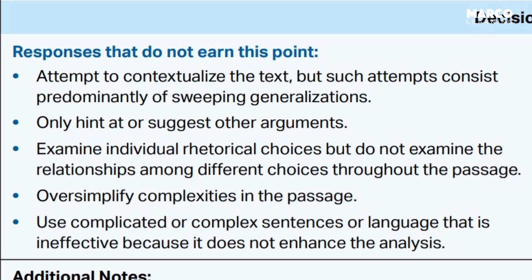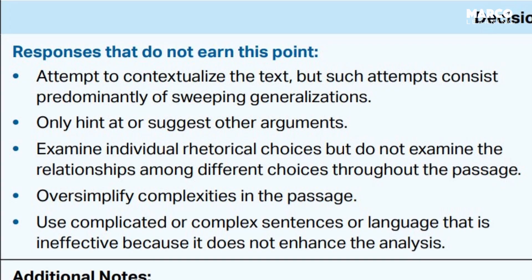The second bullet point says you only hint at or suggest other arguments. So if you, in your conclusion, drift toward a complex idea but don't really develop it in any substantive way, it's not enough to earn the sophistication point. The third one says that you have examined individual rhetorical choices — throughout the passage the author uses diction, syntax, and pathos to achieve his purpose — but do not examine the relationships among different choices. What does the tone shift between paragraphs five and six do to help the author reach her audience? Rhetorical devices aren't just strategies and tricks; they're something the author chooses to develop and accomplish his or her goals.